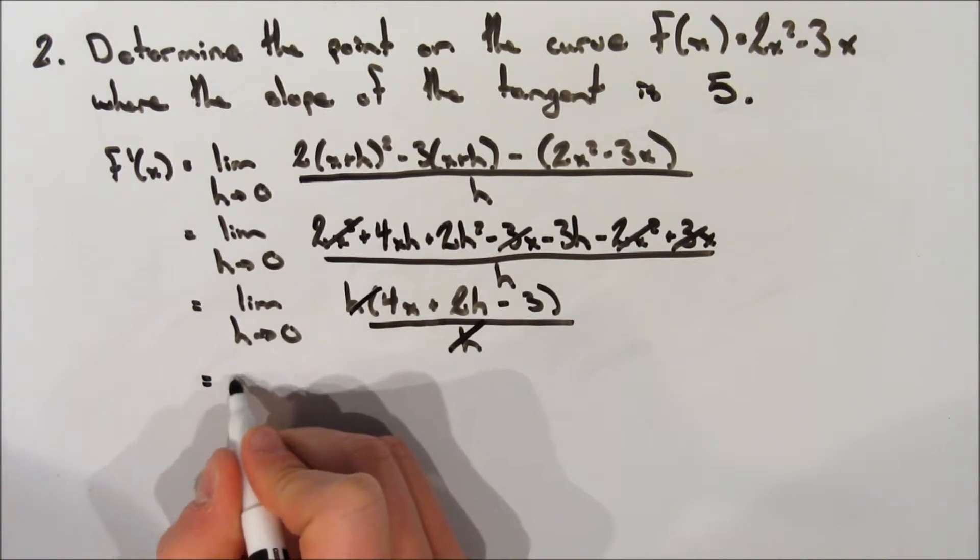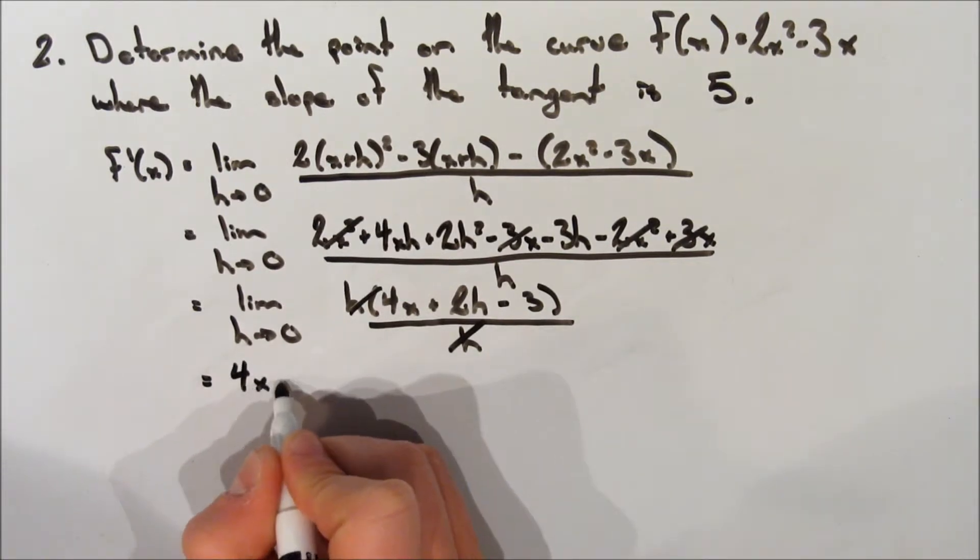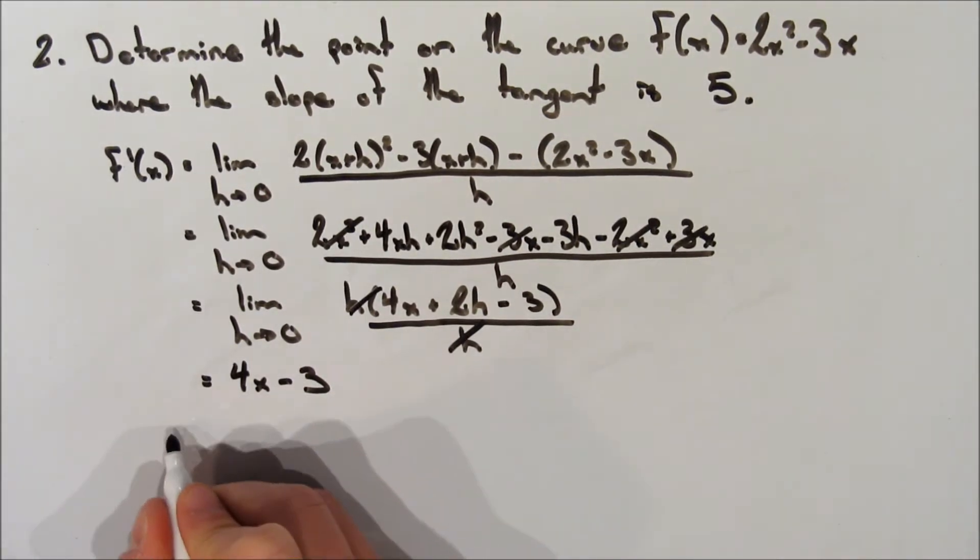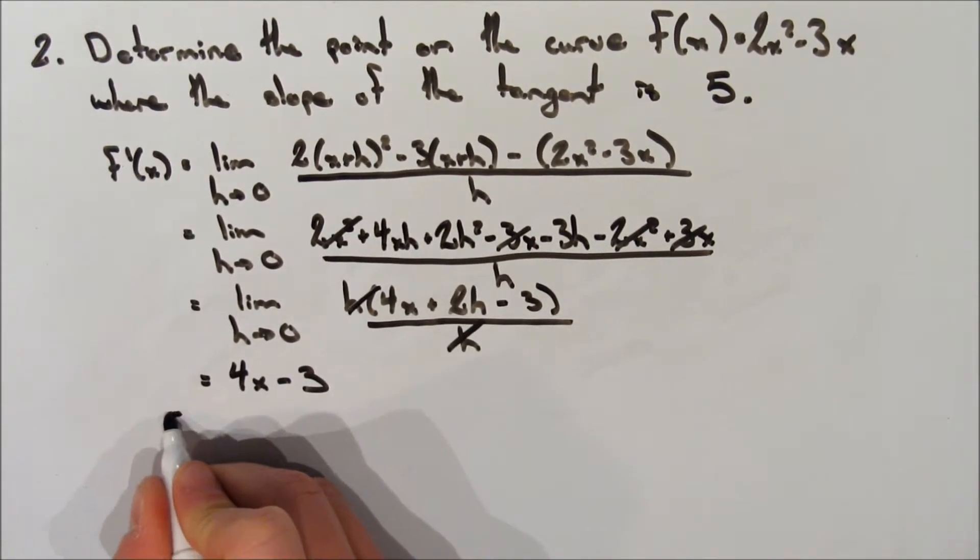So now as we take the limit as h approaches 0, we're going to sub in 0 everywhere where we have an h, and we get that our derivative is 4x minus 3. Now here's where it gets different.